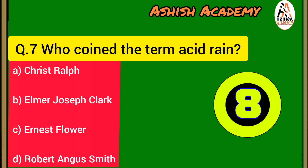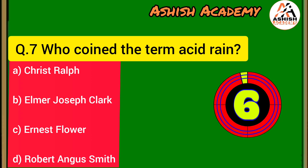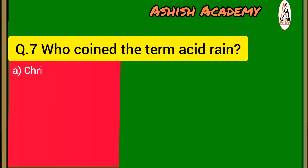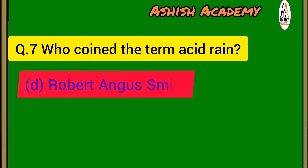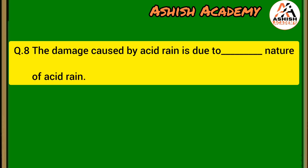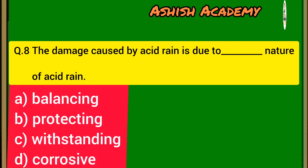Next question: Who coined the term acid rain? Correct answer: option D, Robert Angus Smith.